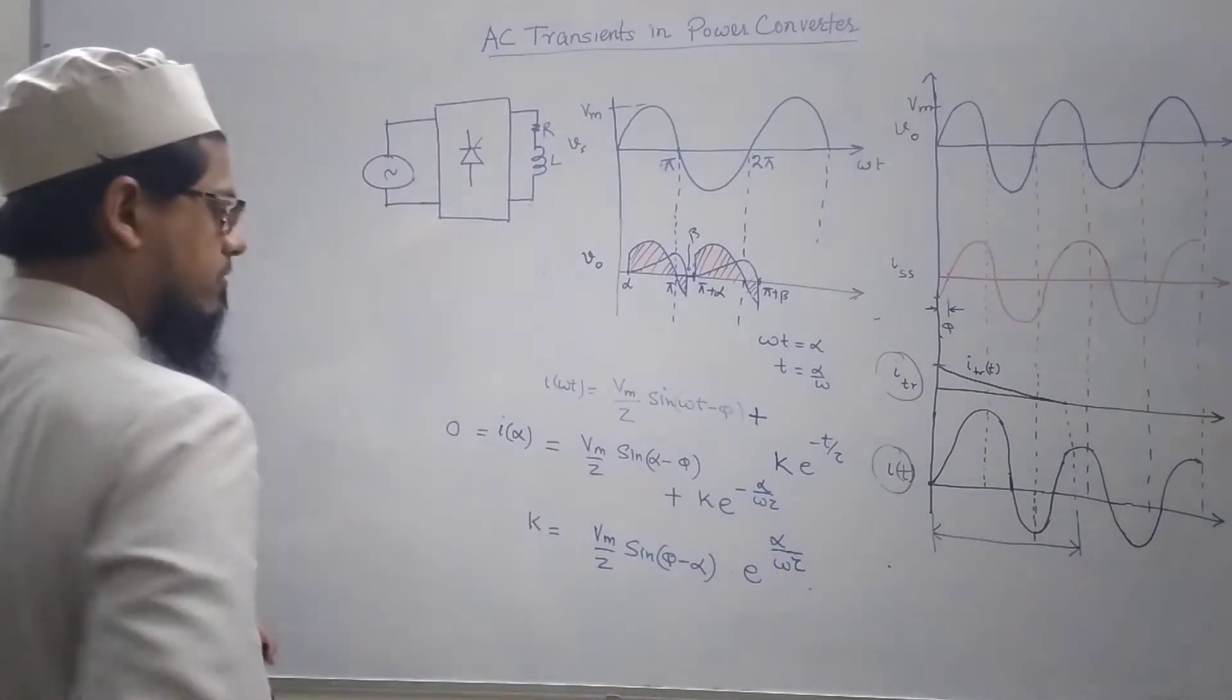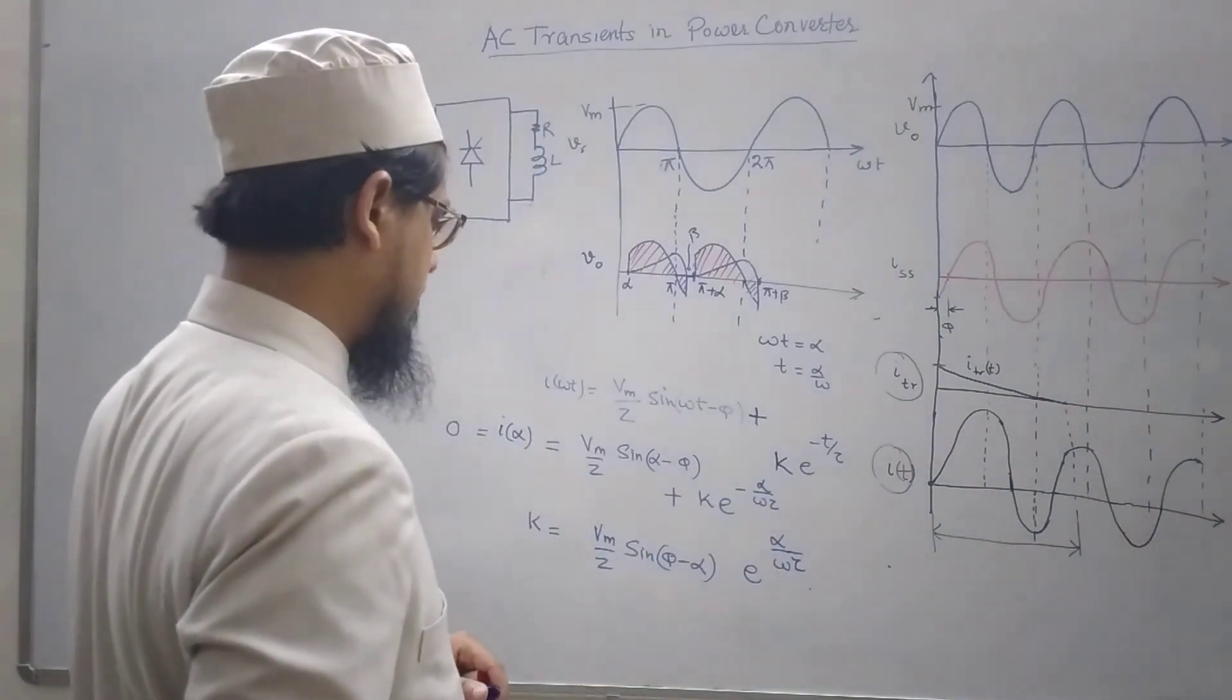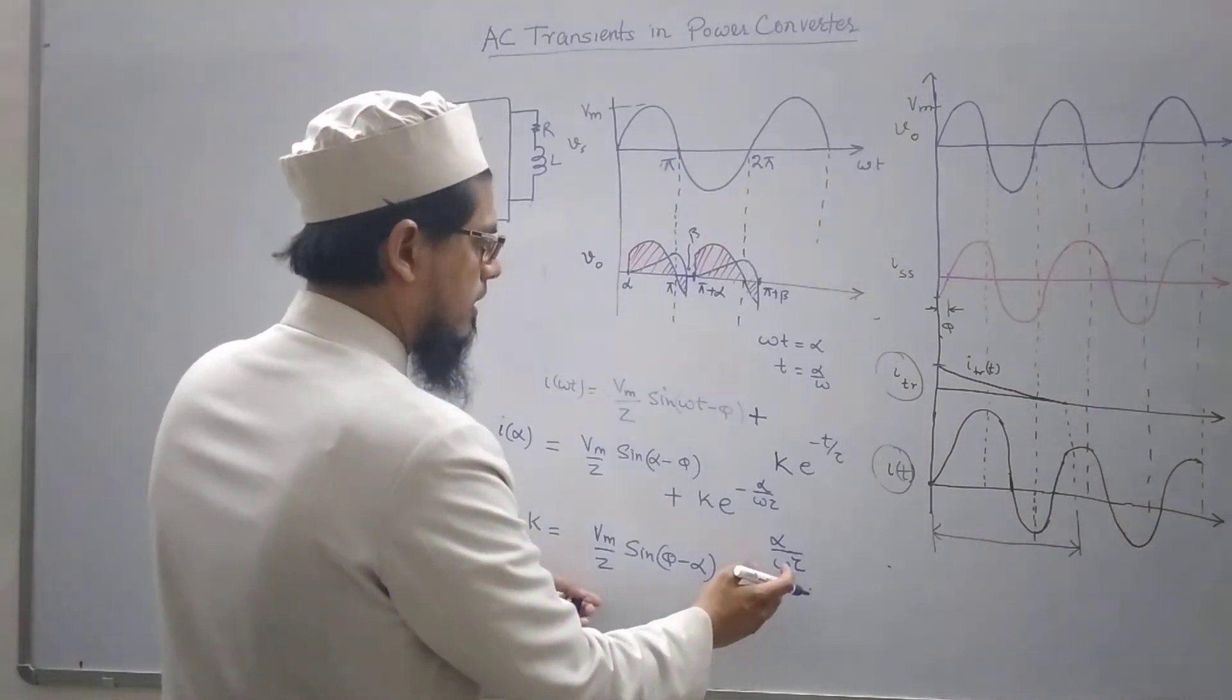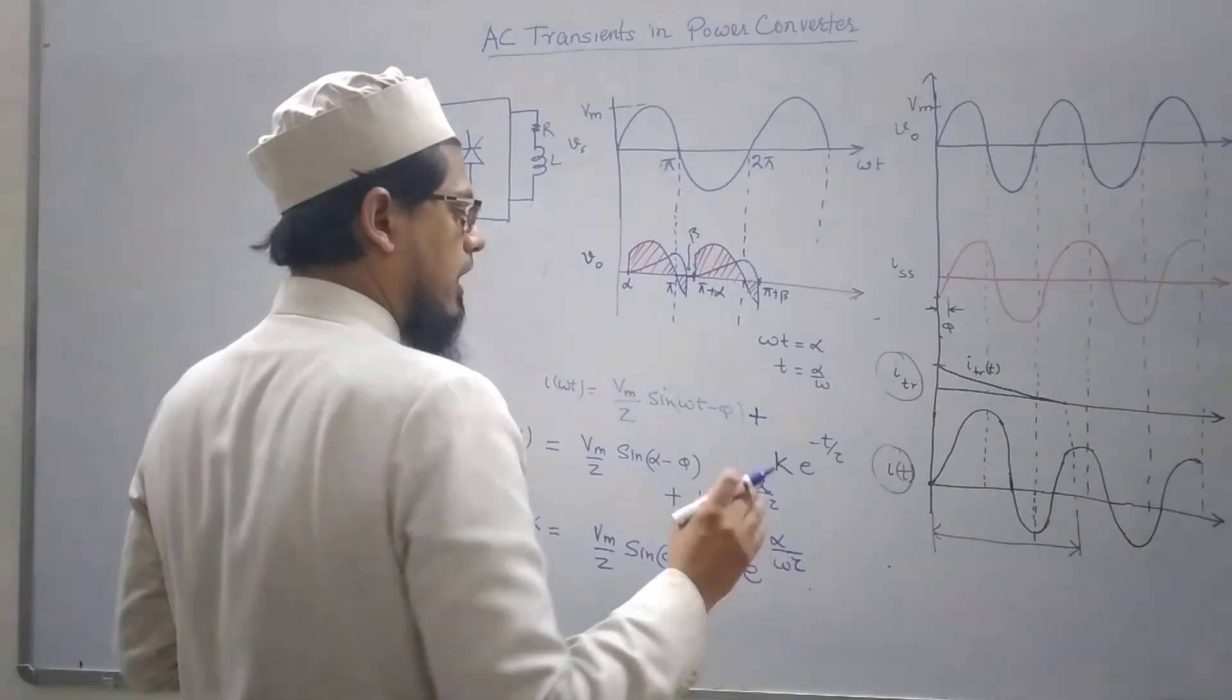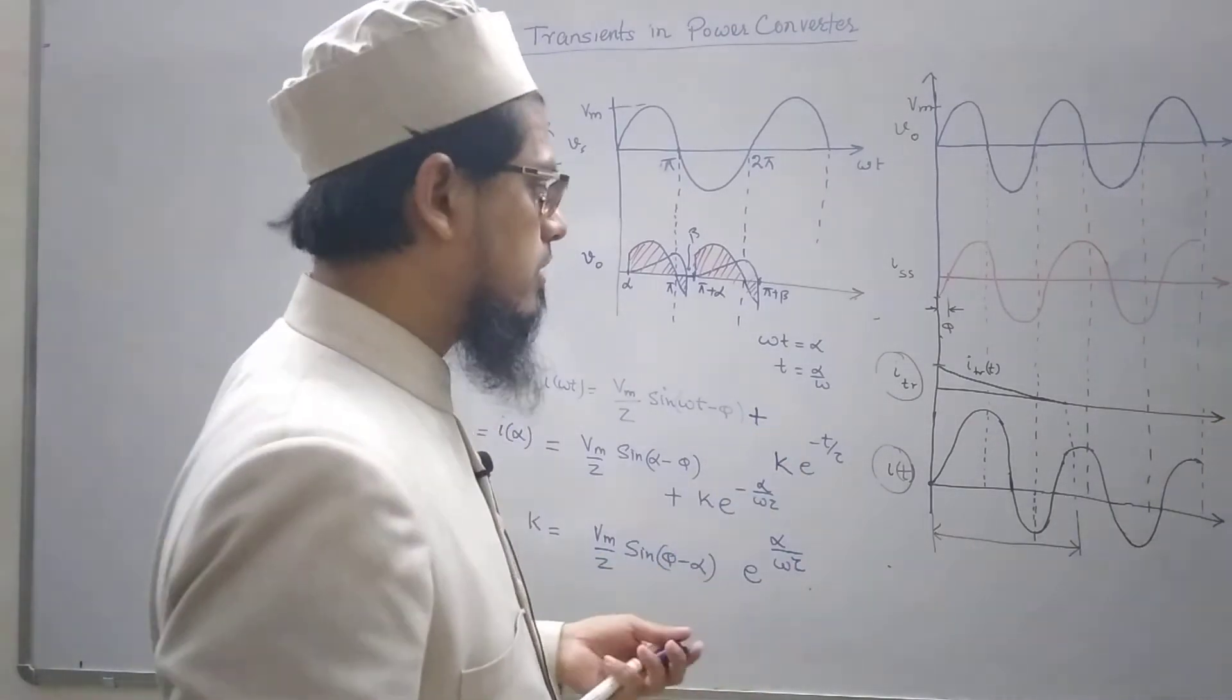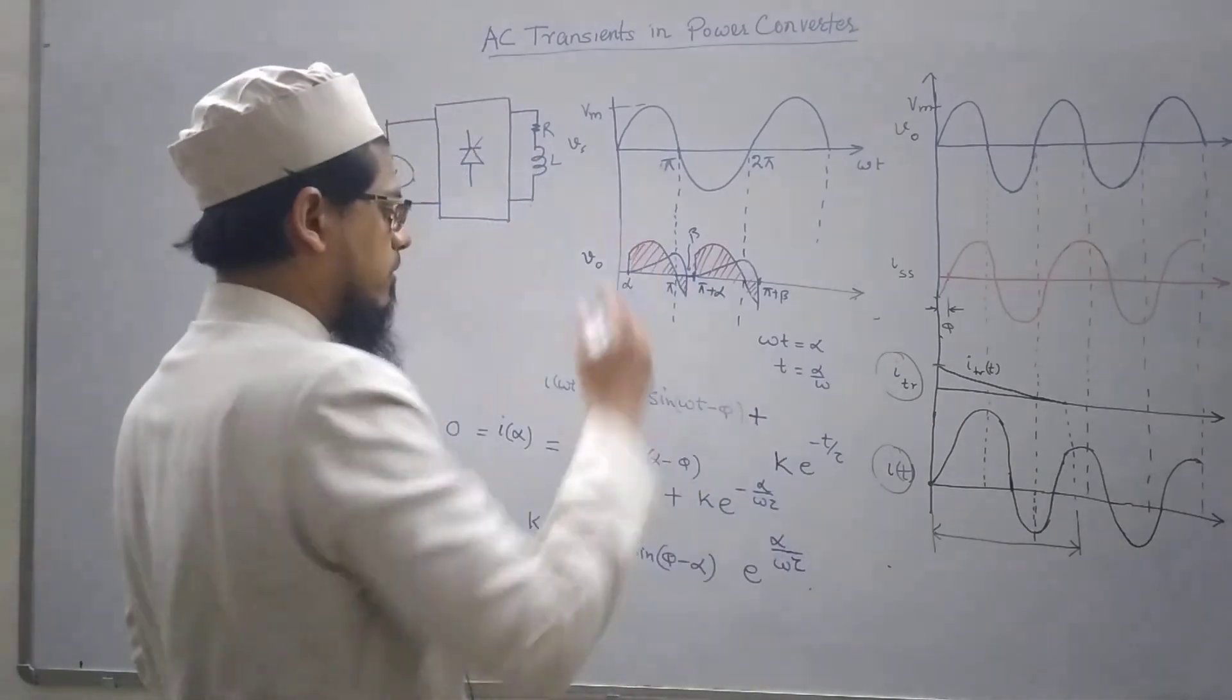I am bringing this on the left side so it would be positive. This is k. So if I put it here in this expression I would get the value of current that would be flowing in this case.